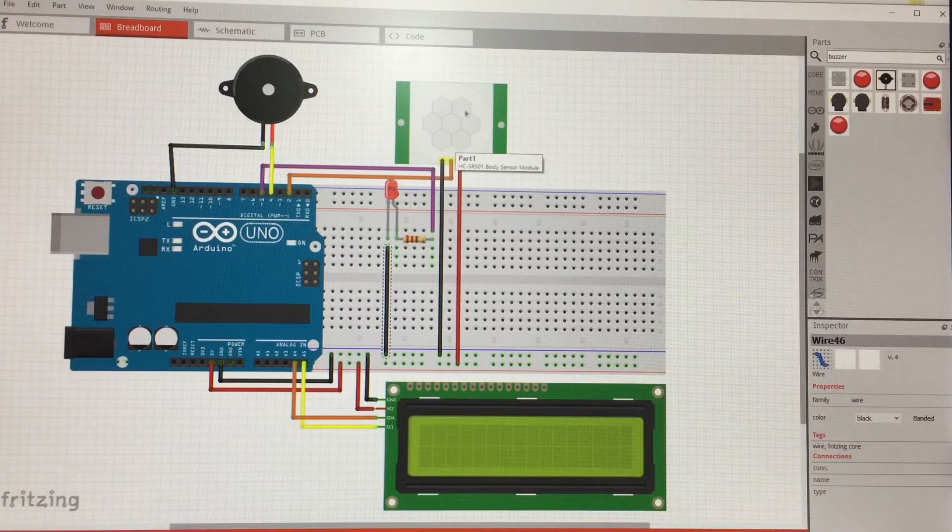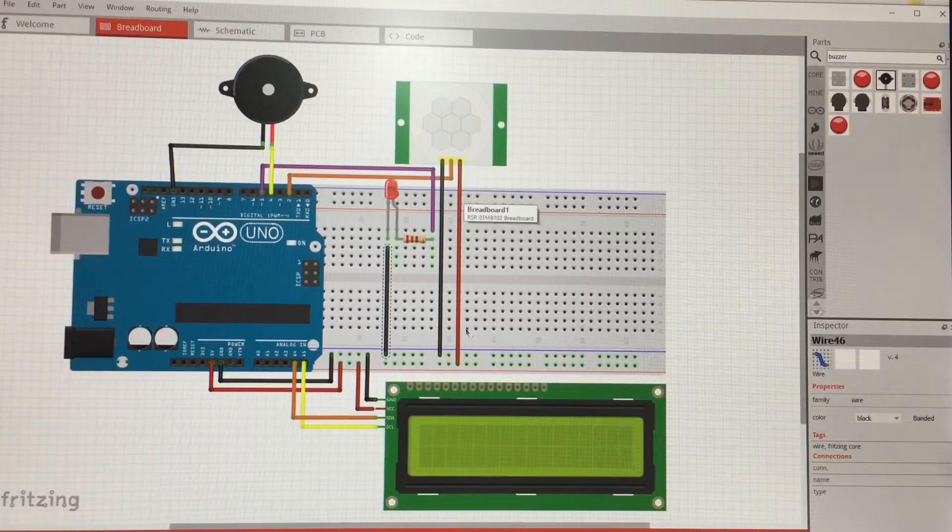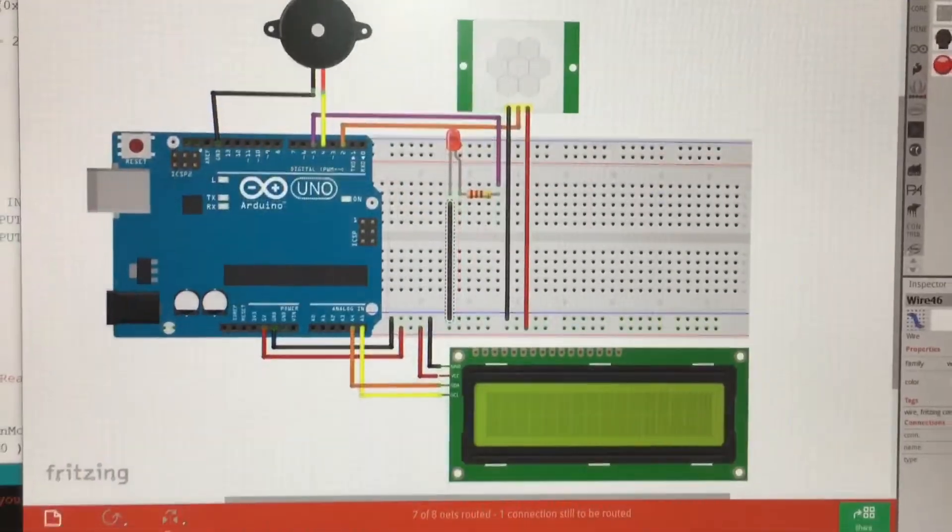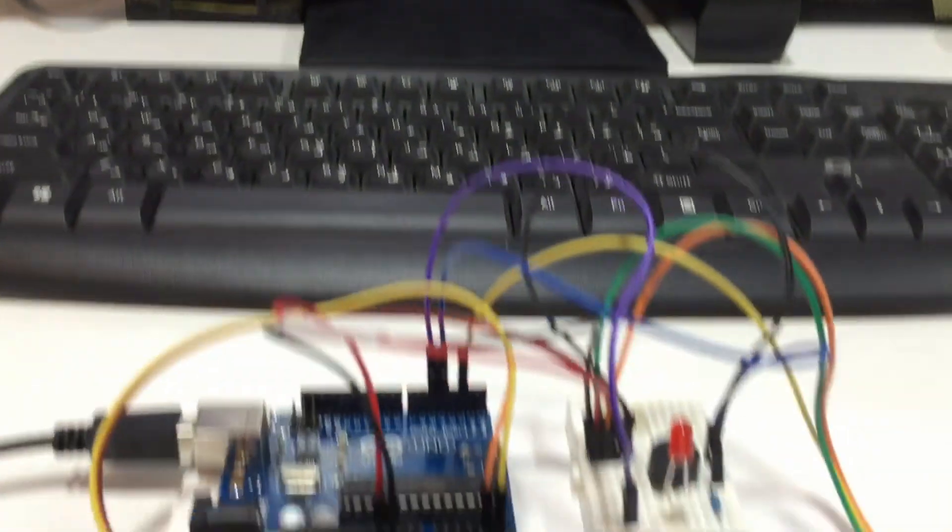Same as for the motion sensor, the red one is VCC, the black one is ground. So, here the prototype is done.